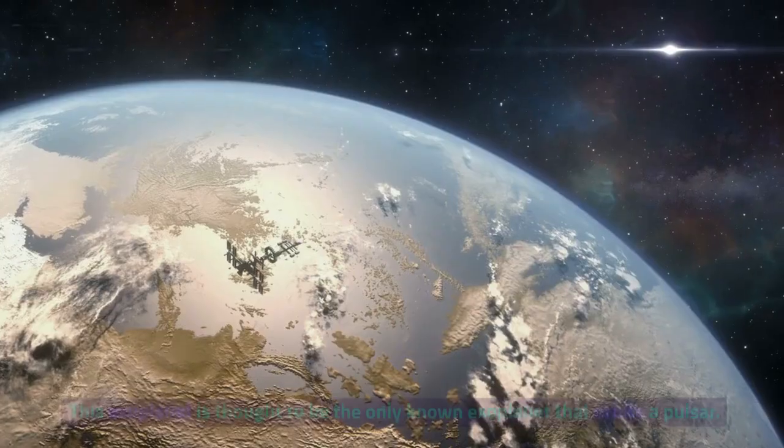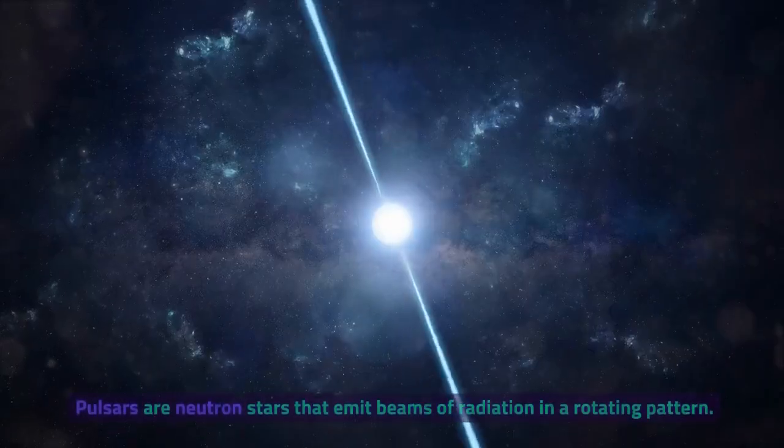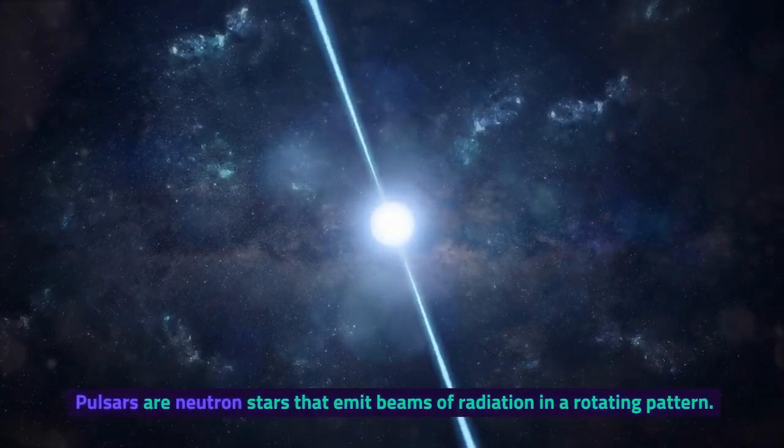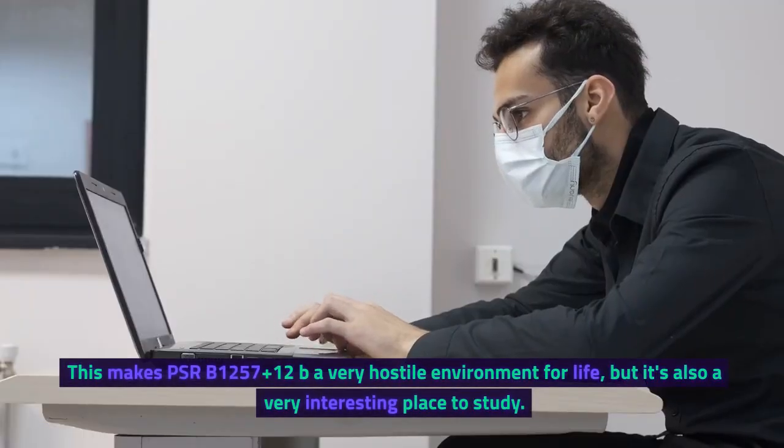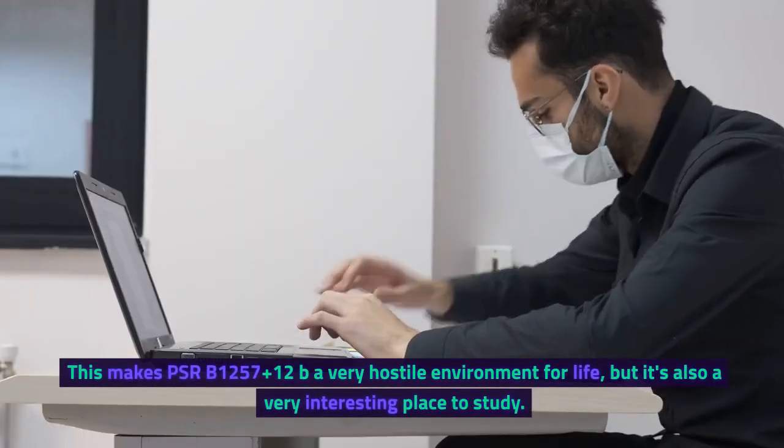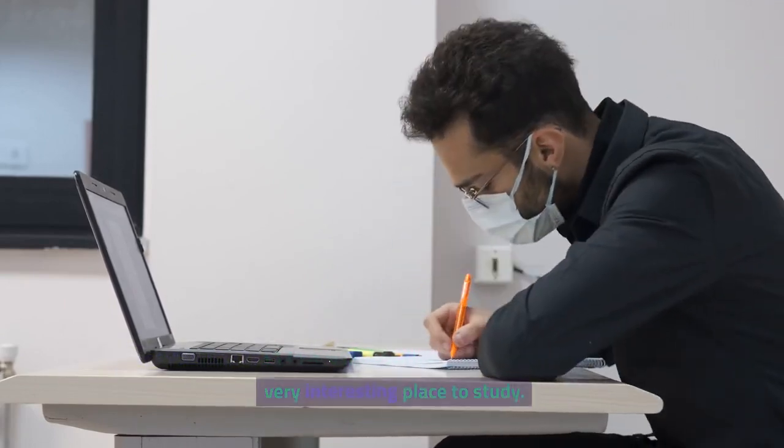PSRB 1257 plus 12 b. This exoplanet is thought to be the only known exoplanet that orbits a pulsar. Pulsars are neutron stars that emit beams of radiation in a rotating pattern. This makes PSRB 1257 plus 12 b a very hostile environment for life, but it's also a very interesting place to study.